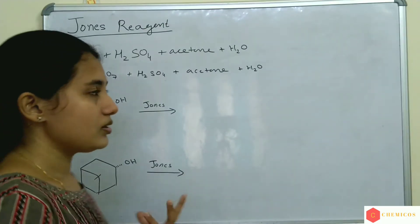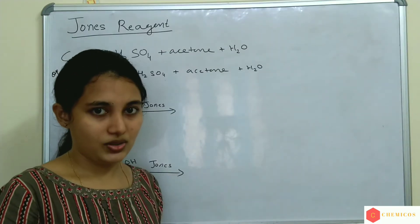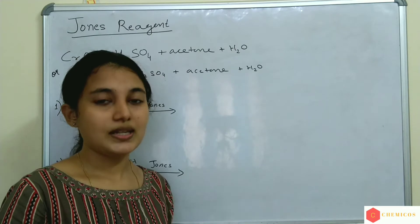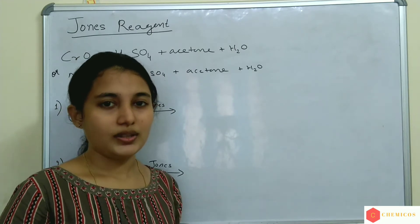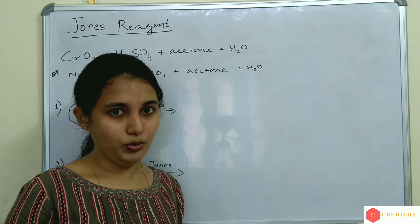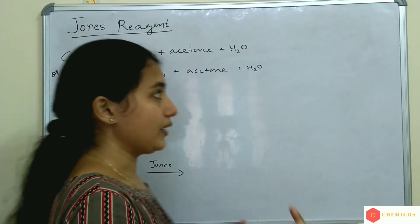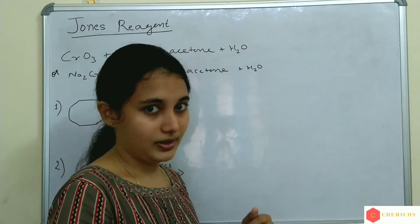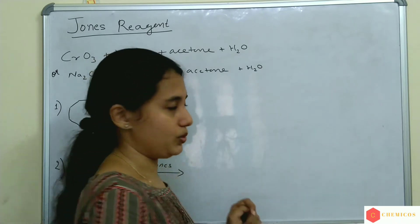What does Jones' Reagent do? Jones' Reagent is used to oxidize secondary alcohols that do not contain acid sensitive groups. Secondary alcohols that do not contain acid sensitive groups are oxidized to ketones.